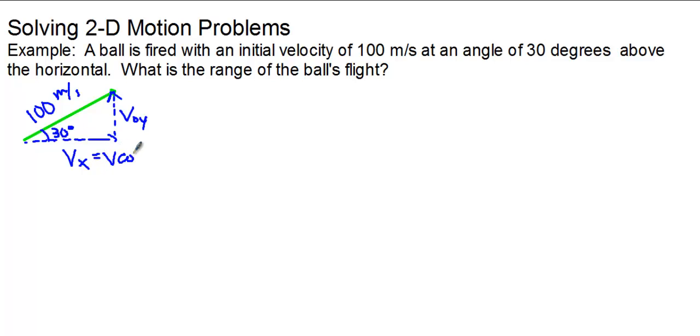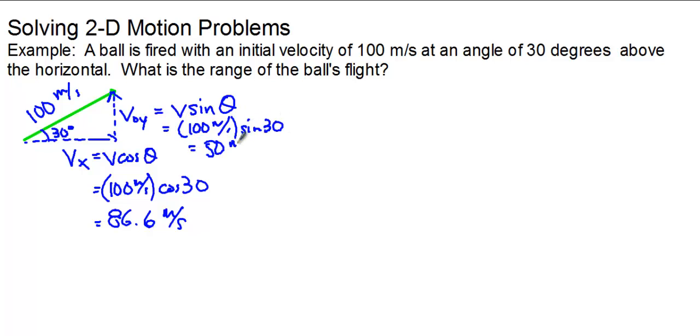So we're going to solve for Vx and V not y using our trig identities. And like we did before, we said that Vx is equal to V times the cosine of theta. So we'll plug in and it will be 100 meters per second times the cosine of 30. And let me plug that in my calculator right quick. And you'll get that the speed is 86.6 meters per second in the x direction. V not y is going to be V times the sine of theta. So that's going to be 100 meters per second times the sine of 30, which is going to be 50 meters per second. So now we have our Vx and we have our V not y.